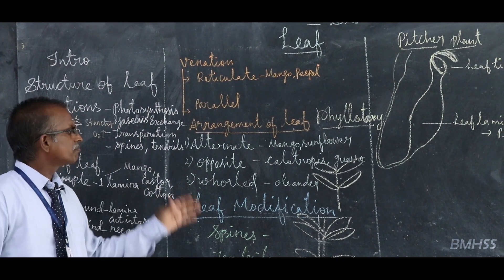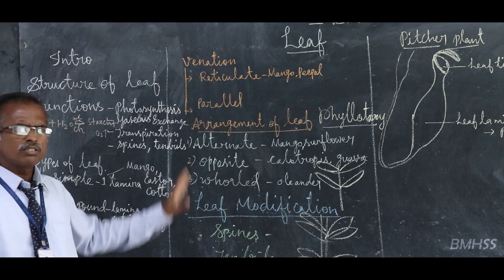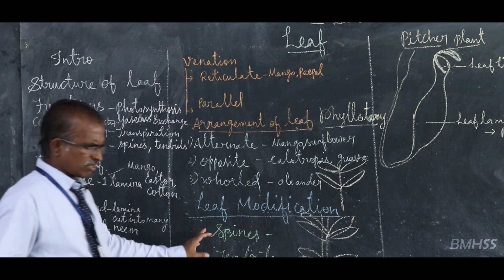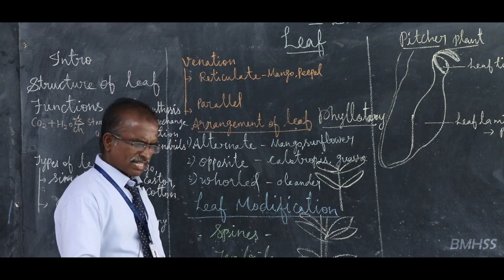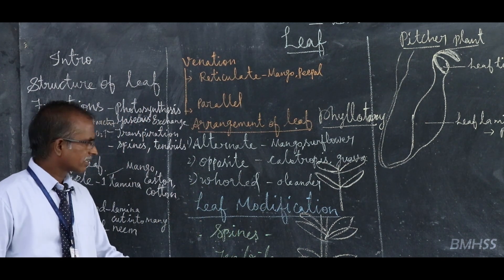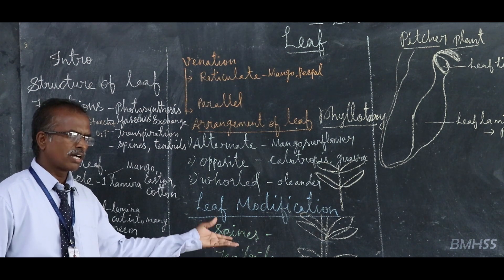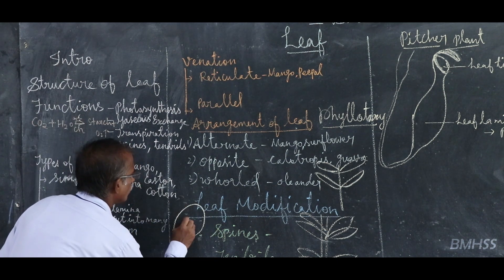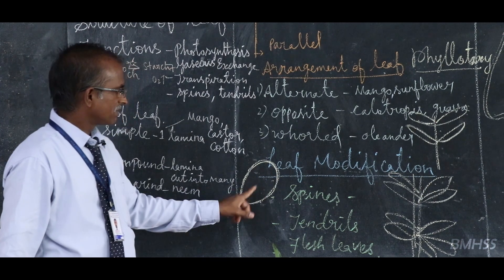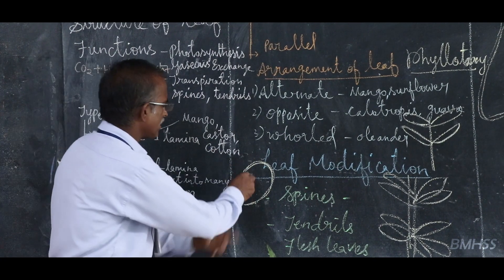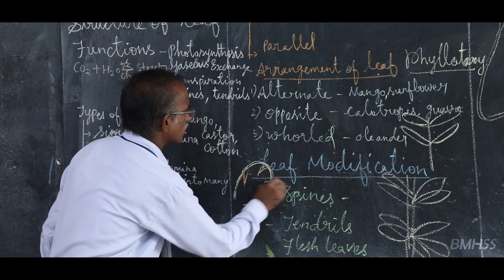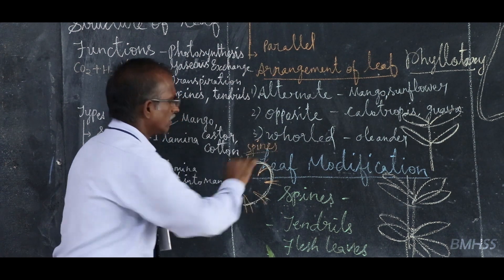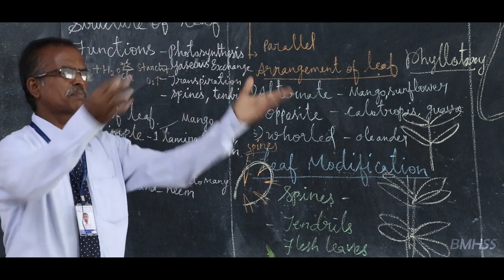Next, leaf modification. The leaf not only performs photosynthesis; several other functions are carried out. In the case of desert plants such as cactus, Opuntia, and prickly pear, the leaves are modified into very minute spines, to avoid transpiration.